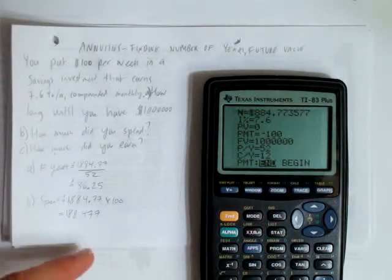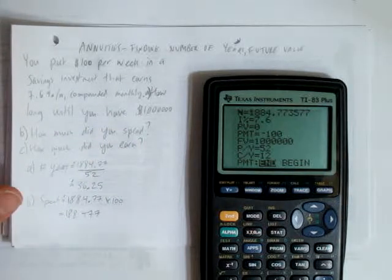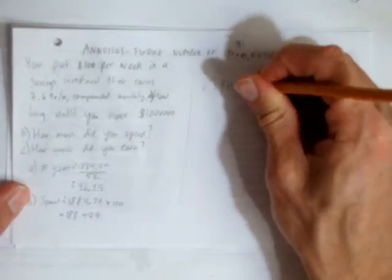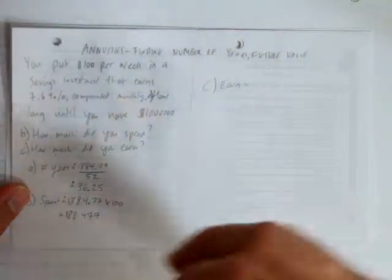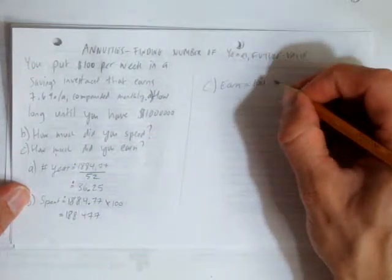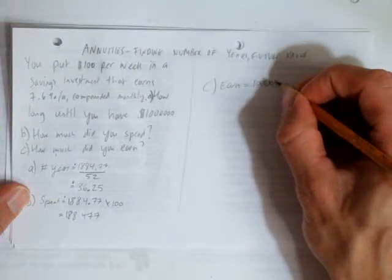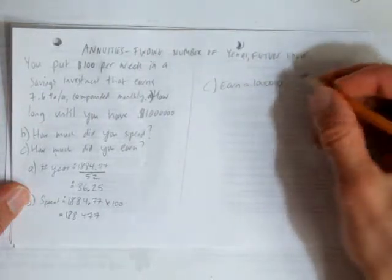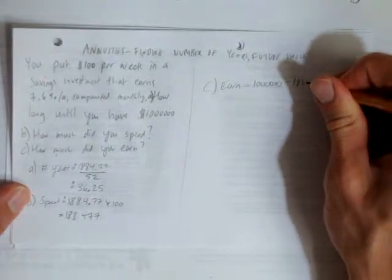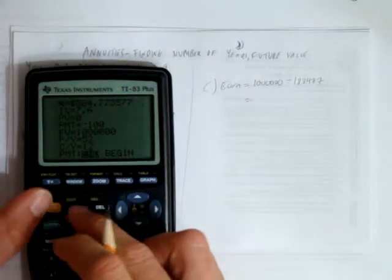Which is pretty sweet when you think about it, because we earned a million bucks. And so when we go to calculate how much did we earn, that's part C, we're just going to figure out how much we had at the end, which we can say was a million bucks, minus how much did we spend, $188,477. And so the difference between that, I just subtract, let's quit out of here, second mode.